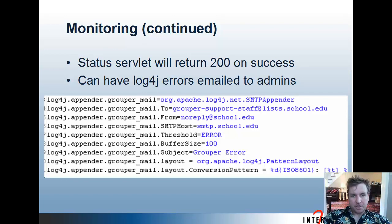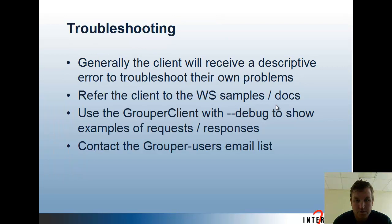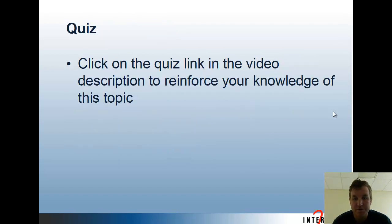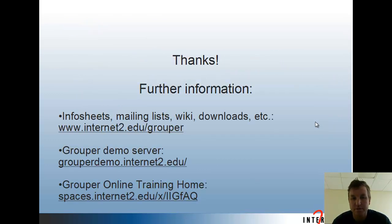Here's an example of a log4j block to set up email of errors to be sent to the support staff. For troubleshooting, clients will generally receive a descriptive error to troubleshoot their own problems. You can refer clients to the web services samples and documentation. The Grouper client with --debug can show examples of requests and responses. You can also contact the Grouper users email list. Please click on the quiz link in the video description to reinforce your knowledge of this topic. Thank you very much.